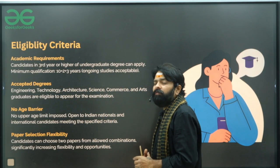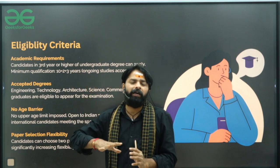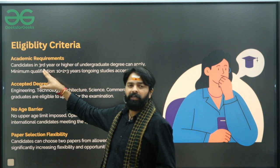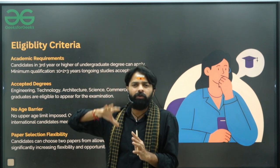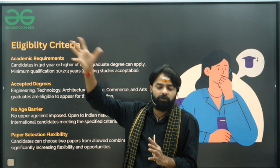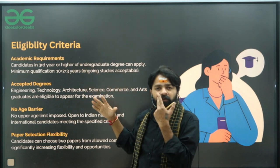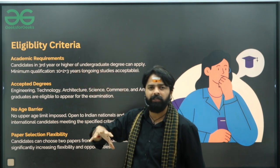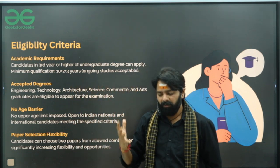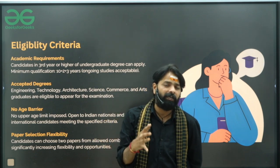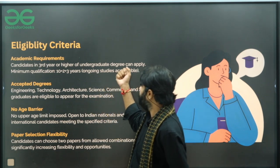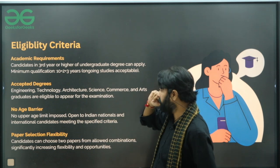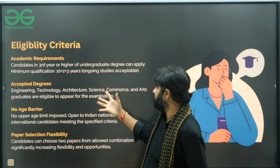Eligibility is one of the advantages — there is no age bar. You just need to be in your third year of your degree, so scores obtained in third year are also eligible. There is three years' validity, so from third year onwards you can start writing. The minimum qualification is 10+2+3, compulsory for ongoing students, and accepted degrees include engineering, technology, architecture, science, commerce, and arts.